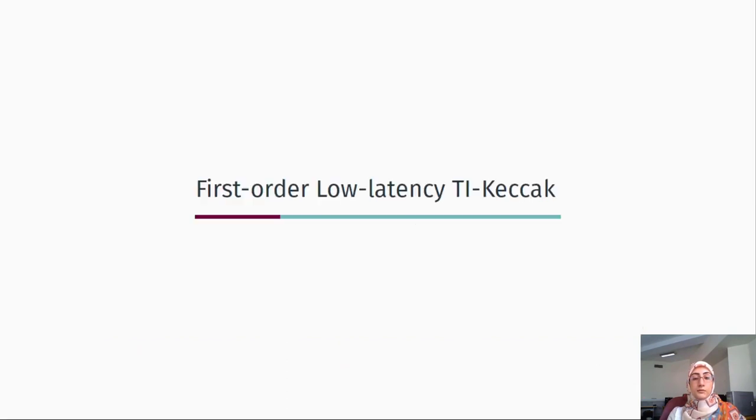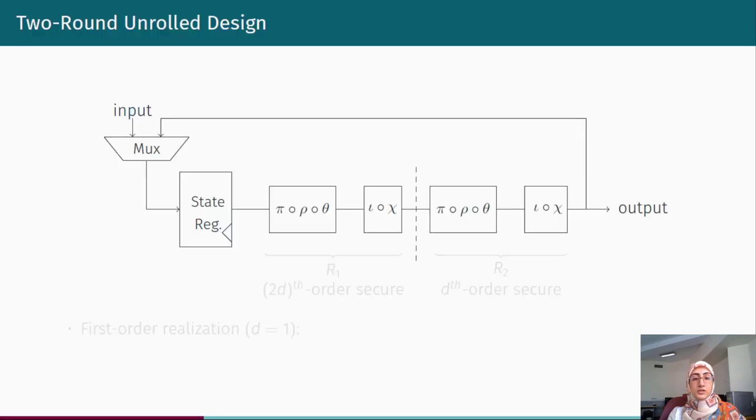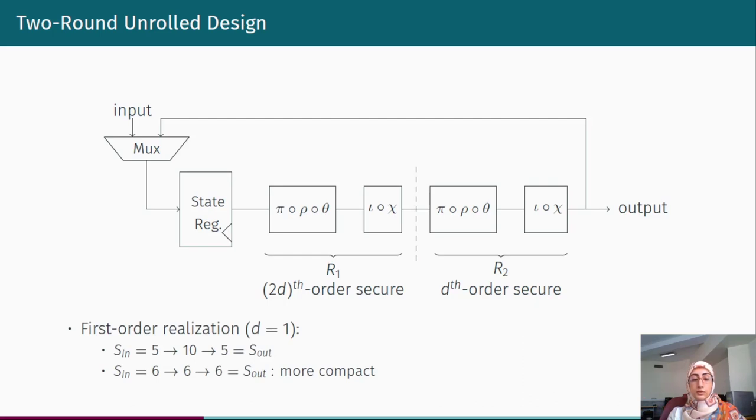Let us say what happens when we want to extend it to higher-order implementations. This is the design of a two-round unrolled threshold implementation of Keccak. If the entire design is supposed to have a security order d according to designers, the first round should have security order of 2d. This application is a necessary rule which ensures non-completeness. However, it implies 2dt plus 1 as the minimum number of input shares. Two implementations are proposed for first-order realization by the designers, one with five input shares and the other with six input shares.